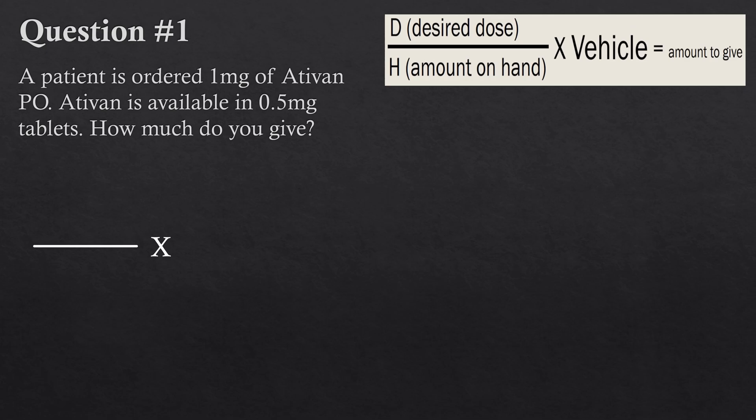Question one: a patient has been ordered 1 milligram of Ativan PO. Ativan is available in 0.5 milligram tablets — how much do you give? We've got the formula up here, so let's start filling in the gaps. The desired dose is obviously how much we want to give the patient, and that's 1 milligram, so we put that on top.